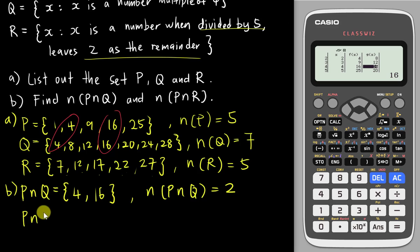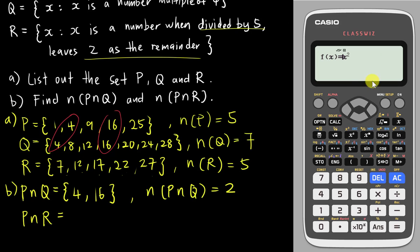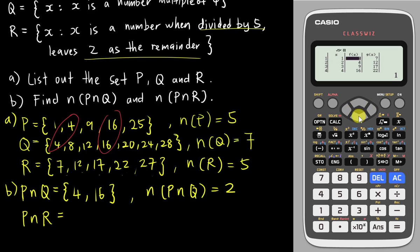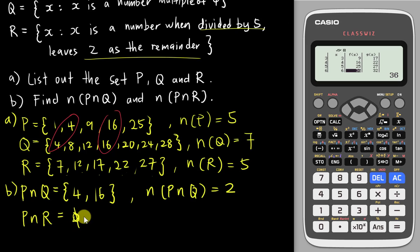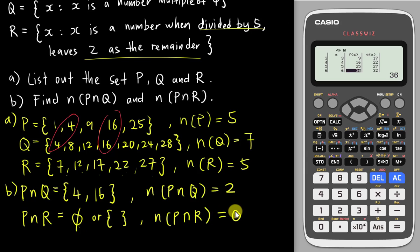The question also asks for P intersect R. I keep fx as x squared for P, and change gx to 5x plus 2 for R. Looking at the table, none of the perfect square values — 1, 4, 9, 16, 25 — appear in the R column. So P intersect R is an empty set, which you can write as the empty set symbol or as empty brackets. The number of elements is 0.